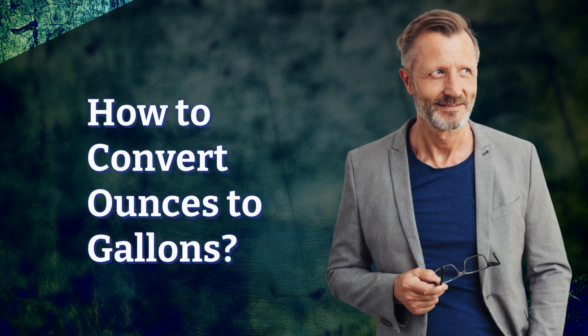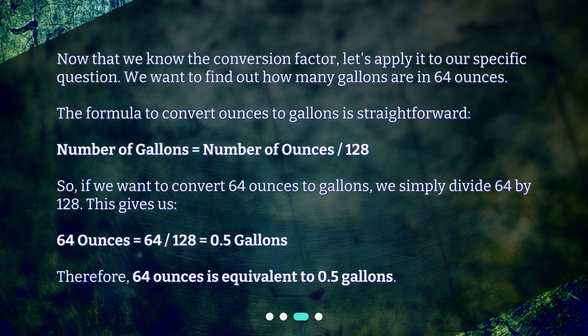How to convert ounces to gallons? Now that we know the conversion factor, let's apply it to our specific question. We want to find out how many gallons are in 64 ounces. The formula to convert ounces to gallons is straightforward: number of gallons equals number of ounces divided by 128. So, if we want to convert 64 ounces to gallons, we simply divide 64 by 128.